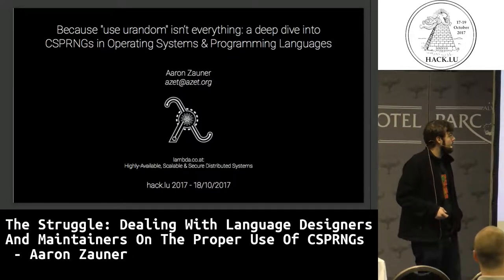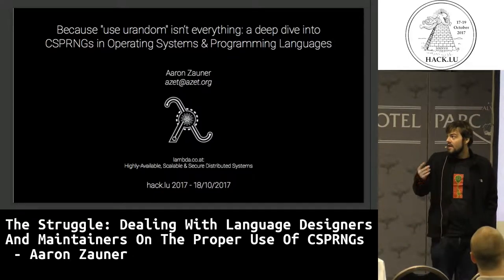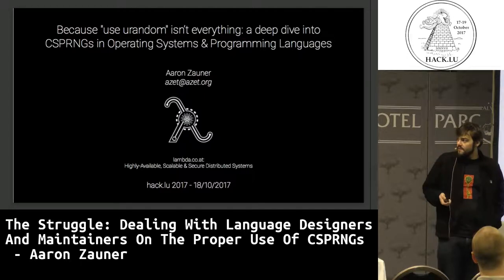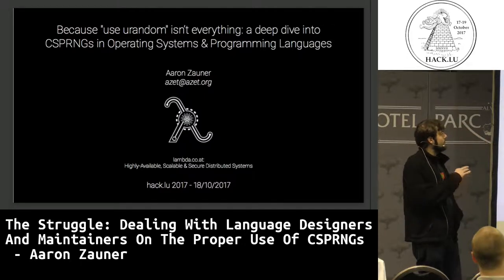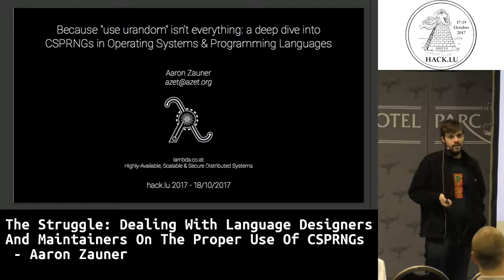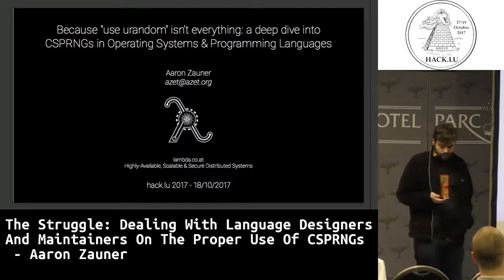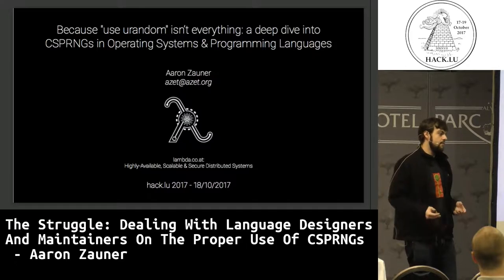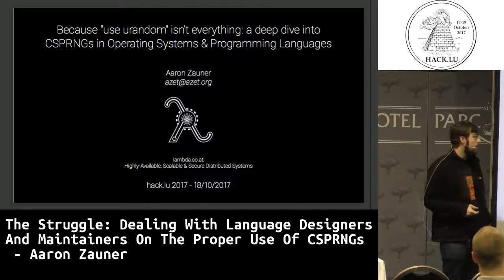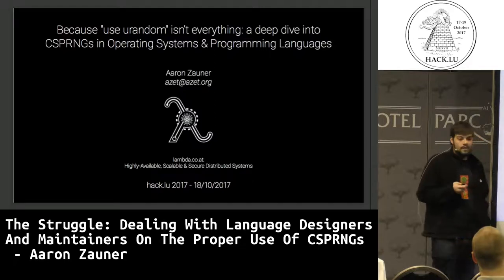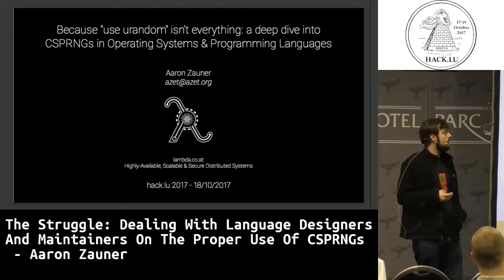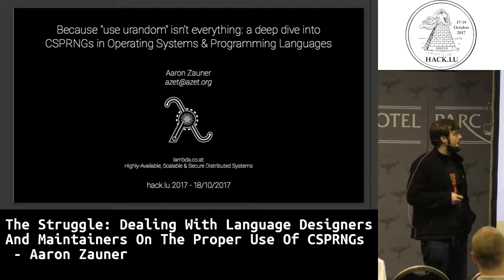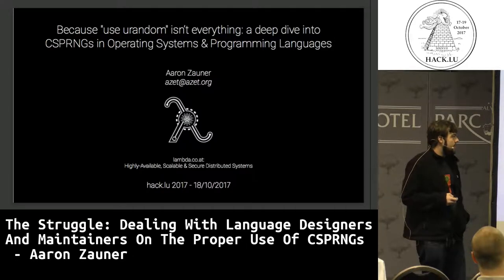On the agenda there's a different title for the talk. I use this one because it fits the talk more. Just to explain why it's called 'Because Your Random Isn't Everything' - there used to be a really well-known blog post by Thomas Ptacek, a cryptographer from Matasano and later different companies, about why you should always use /dev/urandom on a Unix or Linux system. I'm going to go into some details why this isn't always true. In general it's true, but there are corner cases and a lot of things that people still get wrong when dealing with RNGs.